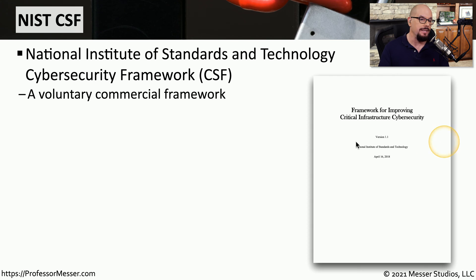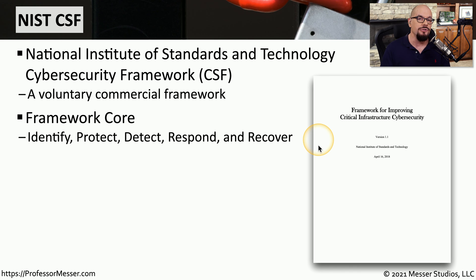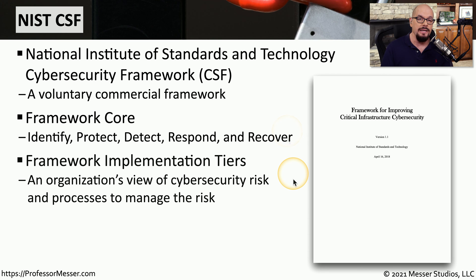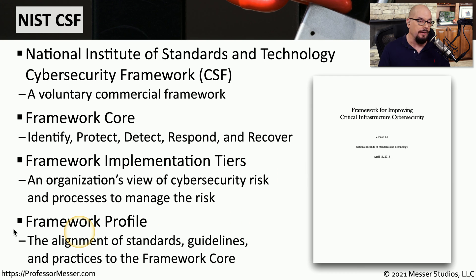Another framework from NIST is the Cyber Security Framework, or the CSF. This framework is designed for commercial implementations, which have a slightly different security posture than a federal government implementation. There are three major areas of the CSF. The first is the framework core, which includes identify, protect, detect, respond, and recover. The second area is the framework implementation tiers, where an organization will understand their approach to cybersecurity and what tools and processes need to be in place to manage identified risks. The third area is the framework profile, where policies, guidelines, and standards are compared to the implementations based on the framework core.